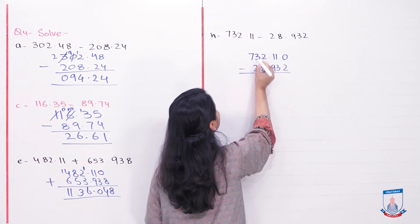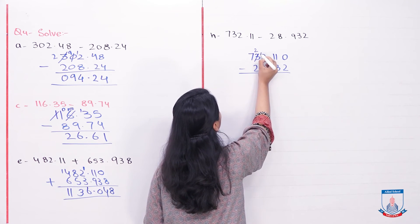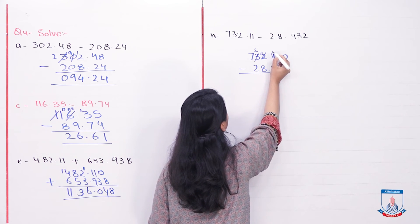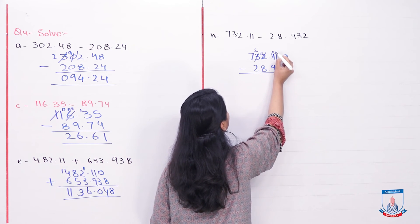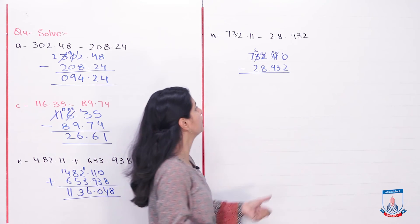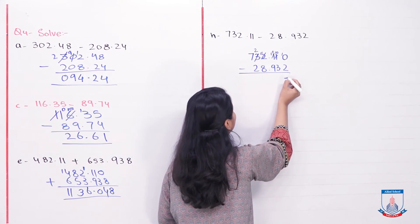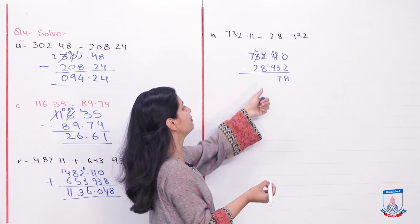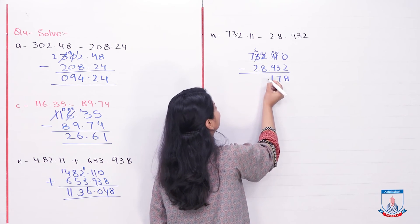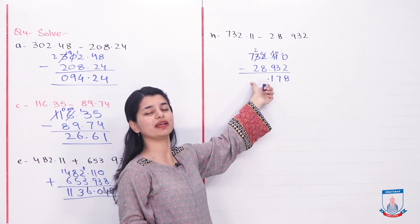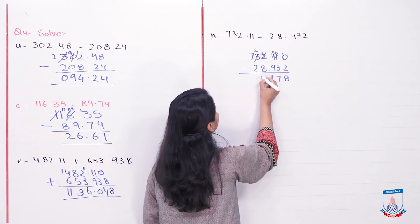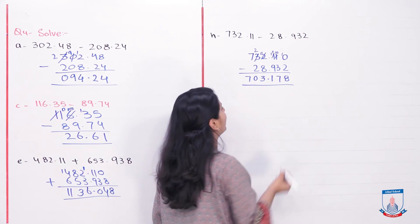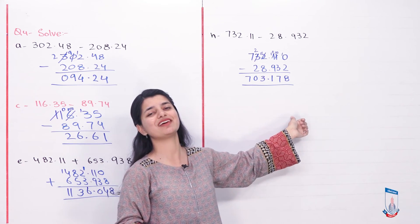We can start with 3. Make this 2, 1 carry. 12. Yeh 11 ho jayega, 1 carry. 11 hai, yeh 10 ho jayega, 1 carry. Again 11 hai, yeh 10 ho jayega, 1 carry. So 10 minus 2 is 8. 10 minus 3 is 7. 10 minus 9 is 1, decimal. 11 minus 8, count, it's 3. 2 minus 2 is 0 and 7. So your answer is 703.178.